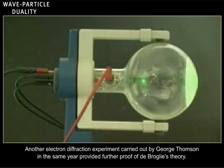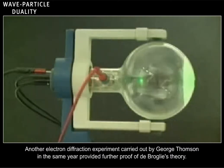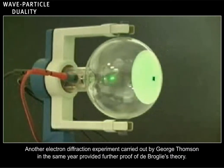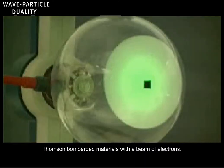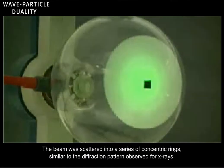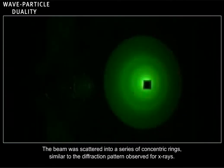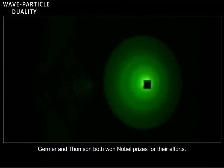Another electron diffraction experiment carried out by George Thompson in the same year provided further proof of de Broglie's theory. Thompson bombarded materials with a beam of electrons. The beam was scattered into a series of concentric rings, similar to the diffraction pattern observed for x-rays. Germer and Thompson both won Nobel Prizes for their efforts.